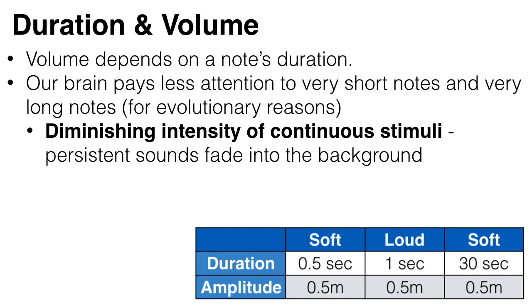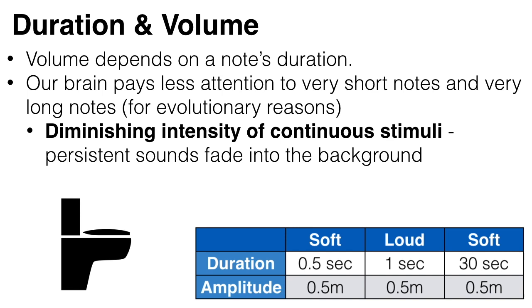This diminishing intensity of continuous stimuli also occurs with our other senses. A toilet initially smells bad, but then we get used to it. If a sound is continuous and nothing bad happens, your brain loses interest and stops noticing. Your brain is more interested in changes in sound, so when the note stops, you suddenly notice the deafening silence.